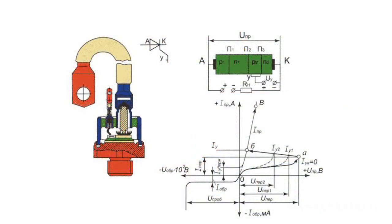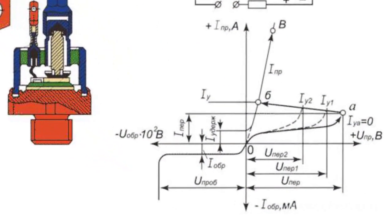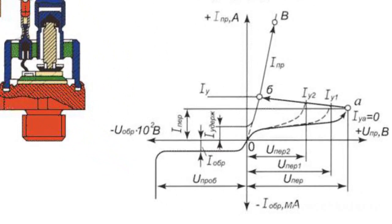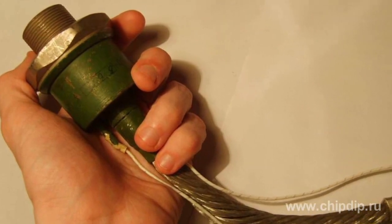Avalanche areas allow us to switch on the thyristor not only with the help of a control current, but also by supplying forward voltage on the anode. Besides, avalanche thyristors can find narrow voltage pulses in the same way as rectifier avalanche diodes do.